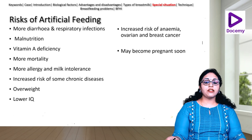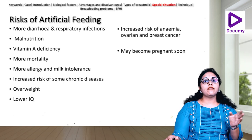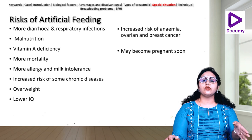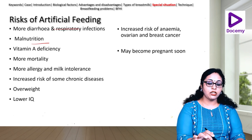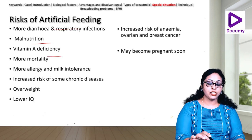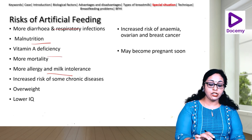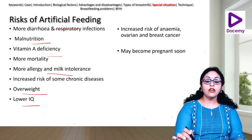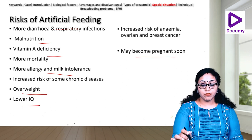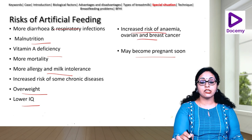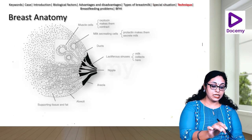Risks of artificial feeding mirror the advantages of breastfeeding: more infections, malnutrition, vitamin A deficiencies, allergies, more morbidity and mortality, overweight, and lower IQ. For the mother: no natural contraception so she may get pregnant soon, and there is increased risk of anemia, ovarian cancer, and breast cancer.